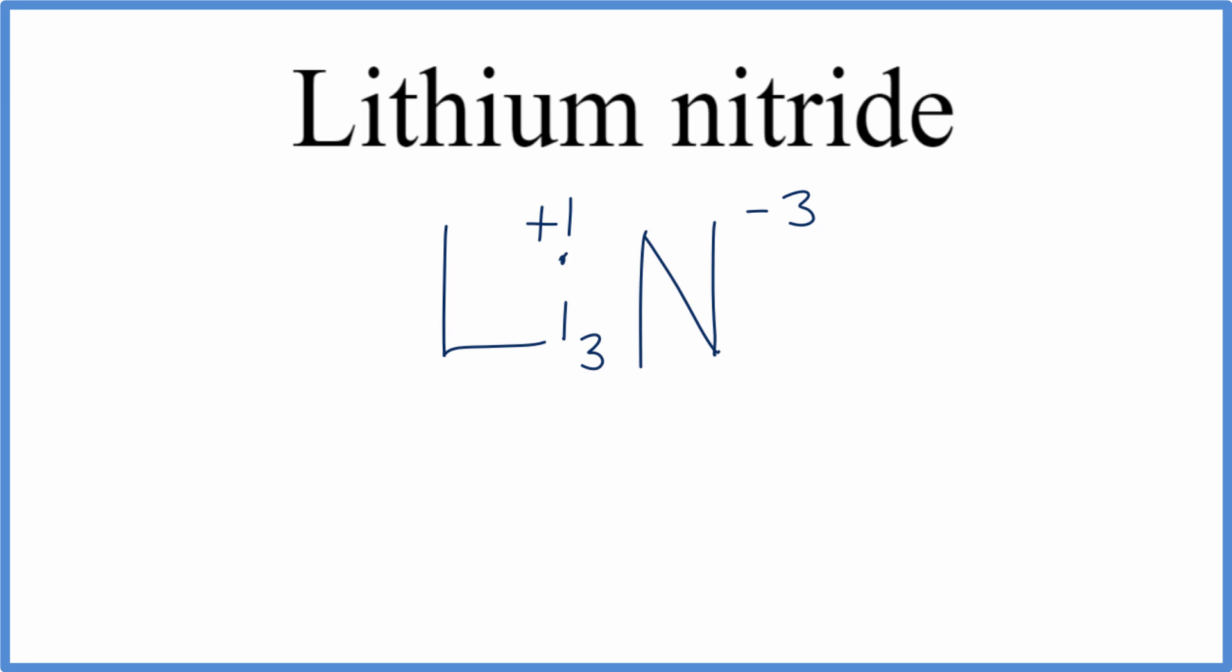There's also another way I can do it. Using the crisscross method, I can take the 3 from the nitrogen, put it here, and then take the 1 from the lithium, and put it over here. We don't really write the 1, so we can get rid of that, and we can get rid of the charges here.